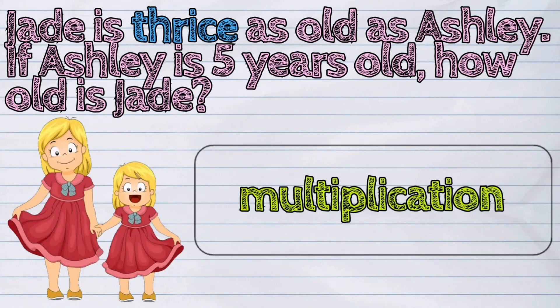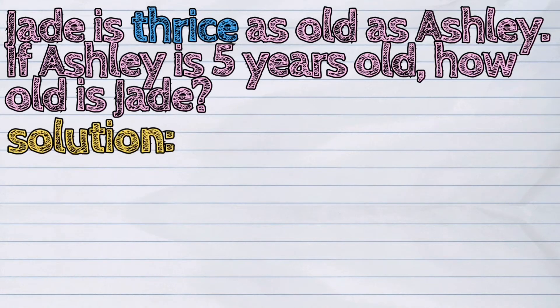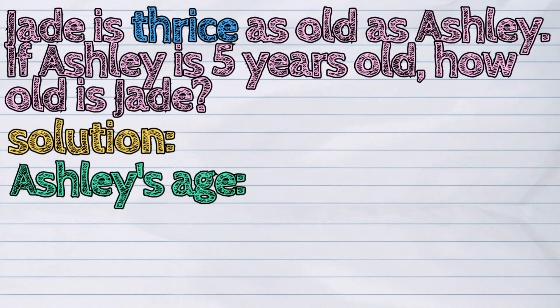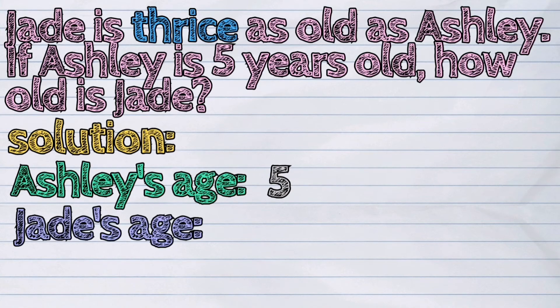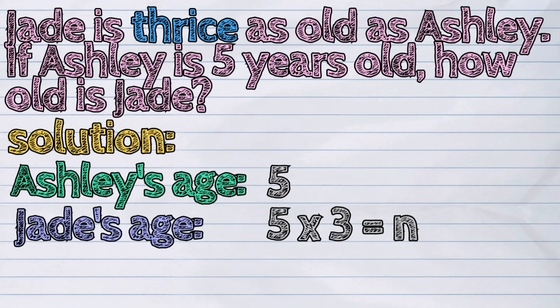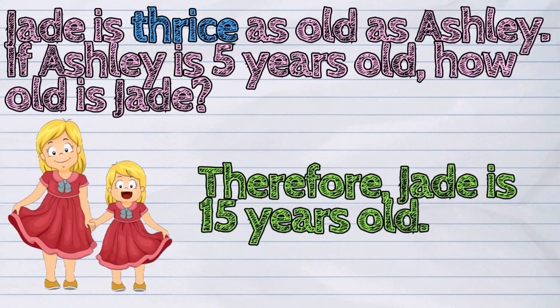Here is the solution. Ashley's age is 5. Jade's age is 5 times 3. 5 times 3 is equal to 15. Therefore, Jade is 15 years old.